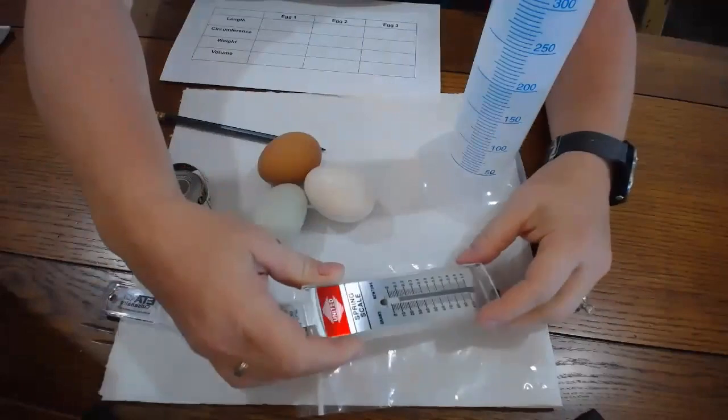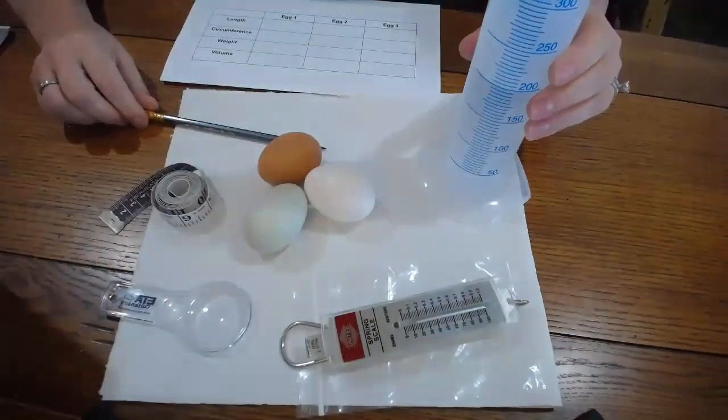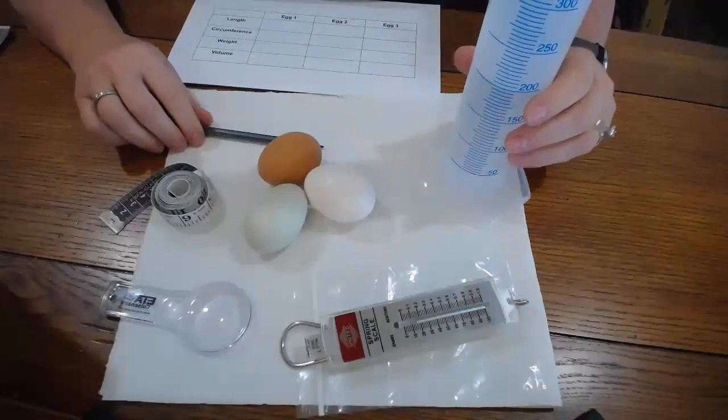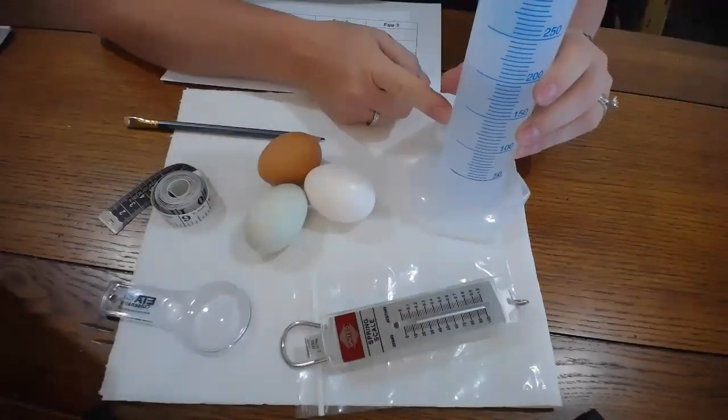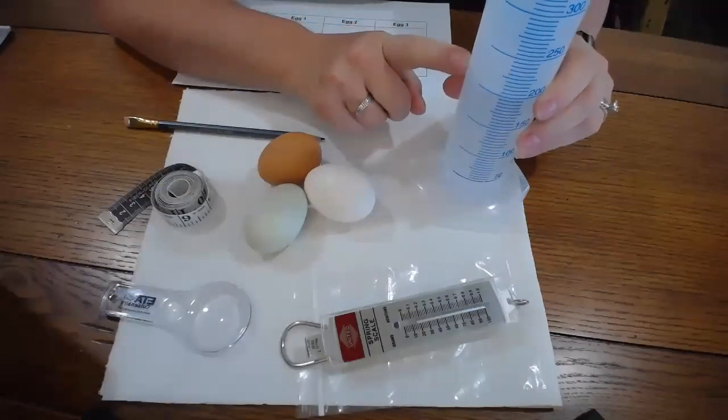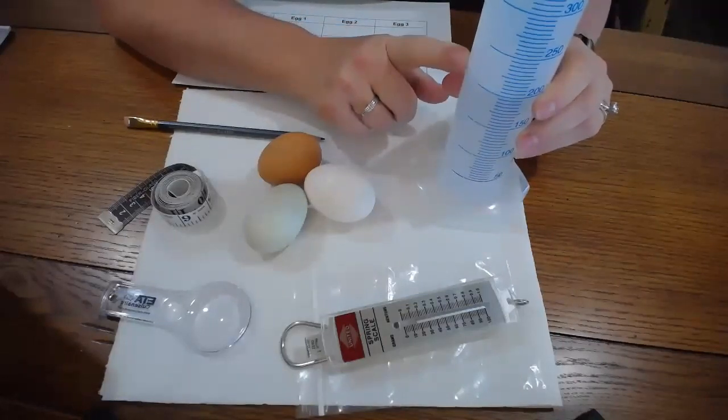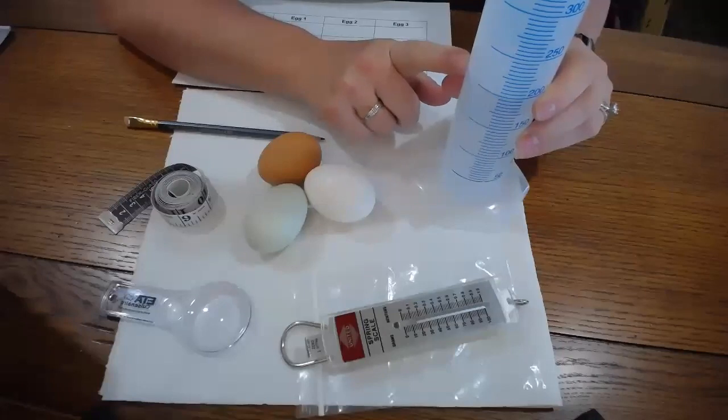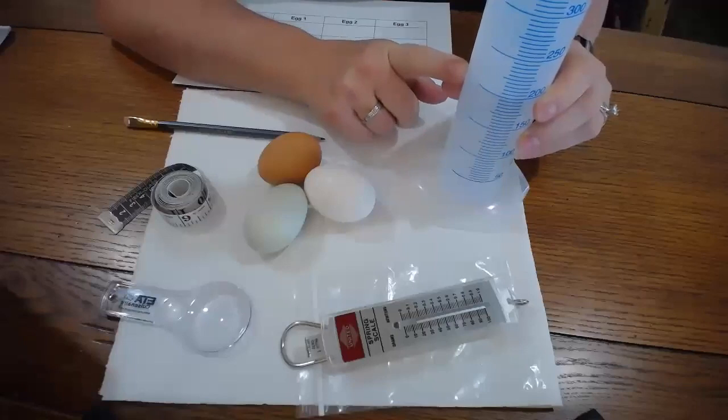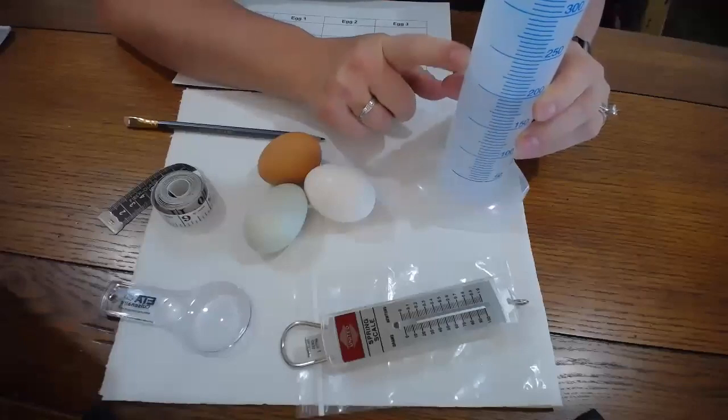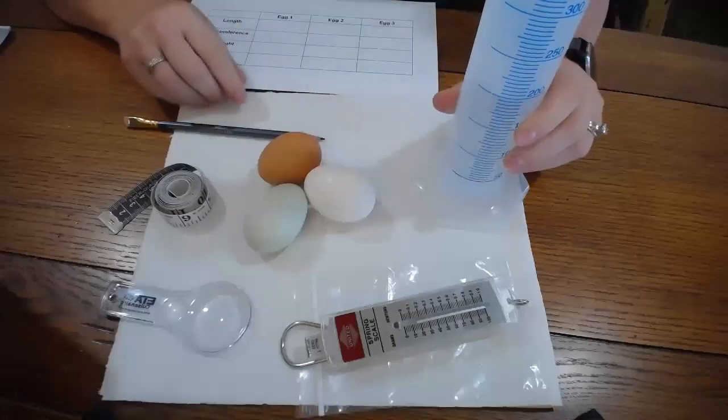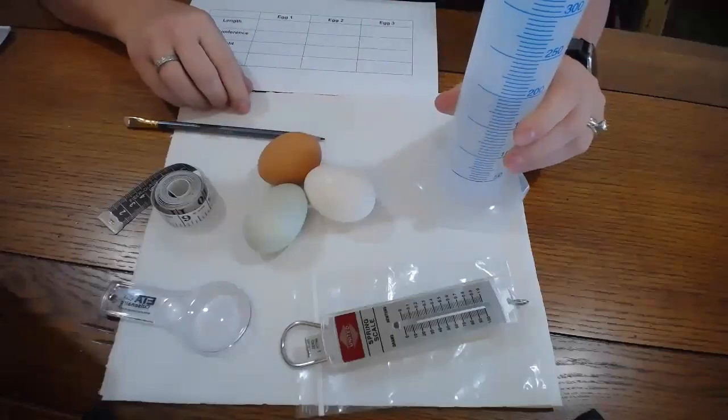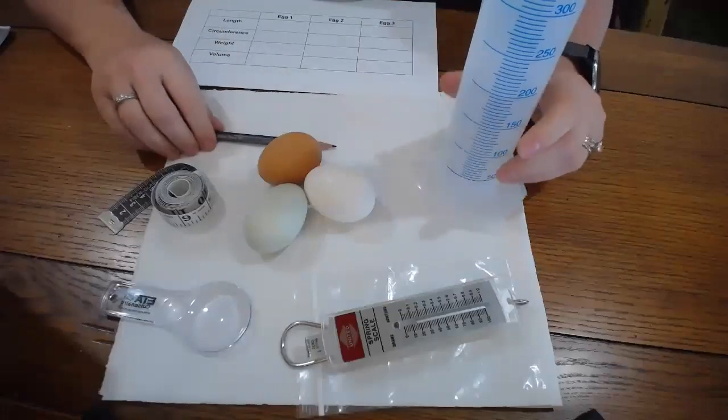The last thing that we're going to measure today is the egg's volume, and what that means is the amount of space that it takes up. So I brought a graduated cylinder today, and I filled it with 200 milliliters of water, and we are going to put an egg in there and watch how the egg takes up space in the graduated cylinder. What will happen is it'll make the water rise, and I can record that difference and discover the egg's volume. Are you ready to get started?